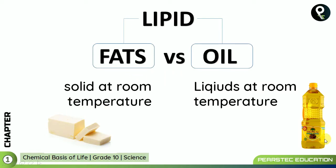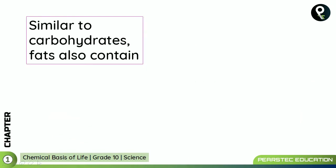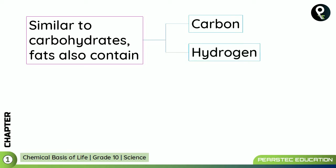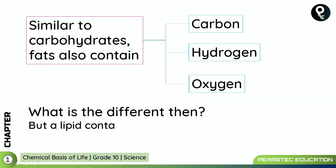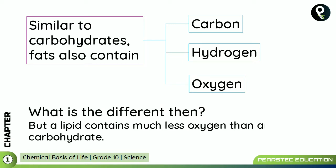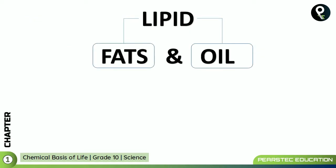You cannot call cooking oil fats — it is different. But both fats and oil come under the category called lipid. Similar to carbohydrates, lipids also contain three things: carbon, hydrogen, and oxygen. But what is the big difference? A lipid contains much less oxygen than carbohydrates. That is the difference — carbohydrates will have more oxygen than lipids.